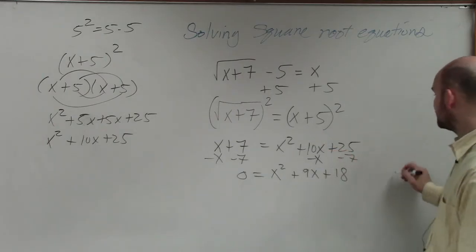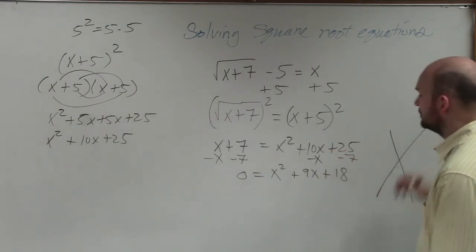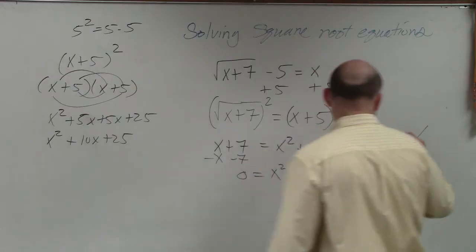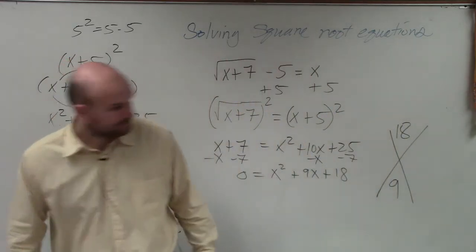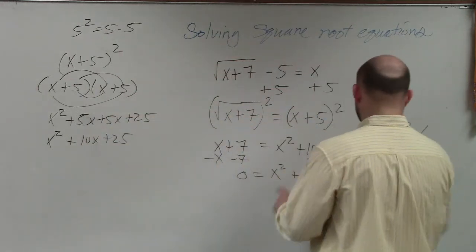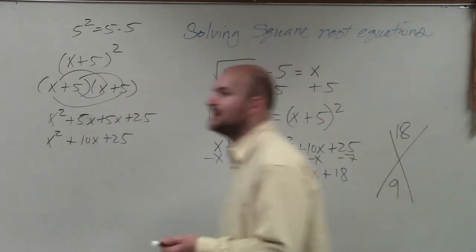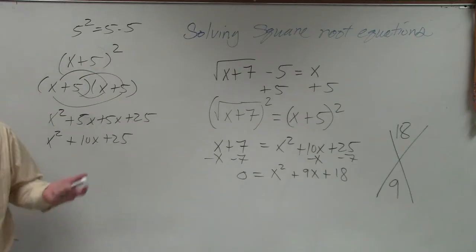So now we need to factor this. Well, if you're going to go ahead and factor, ladies and gentlemen, remember, we have 18 and positive 9. What two numbers multiply to give you positive 18 and add to give you 9?